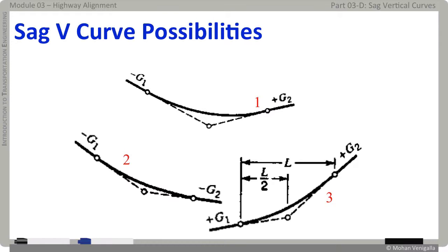First, you can see a negative grade G1 is followed by a positive grade G2. In the second case, a steeper negative grade G1 is followed by a relatively less steep negative grade G2. And in the third case, a flatter positive G1 is followed by a relatively steeper and still positive grade G2, which also makes a sag vertical curve.